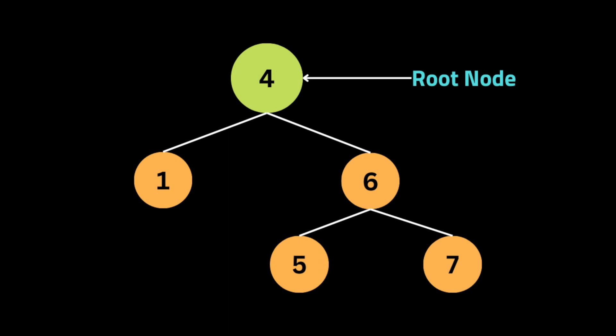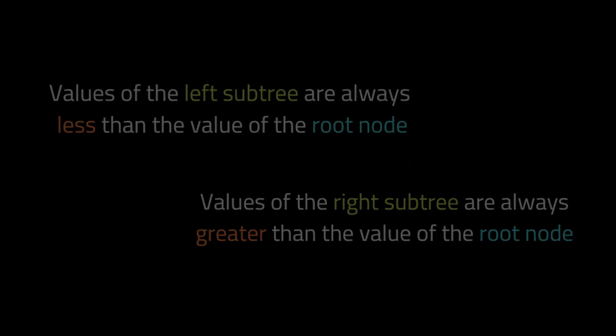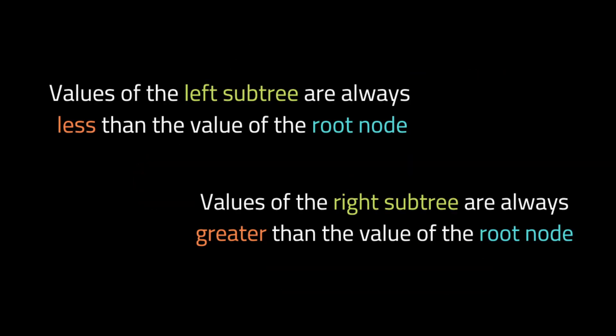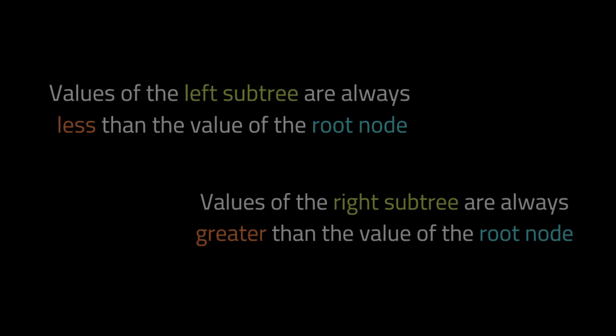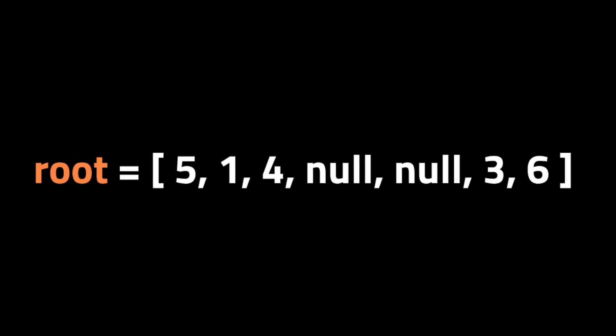A binary search tree is a tree where the values of the left subtree are always less than the value of the root node, and the values of the right subtree are always greater than the value of the root node.